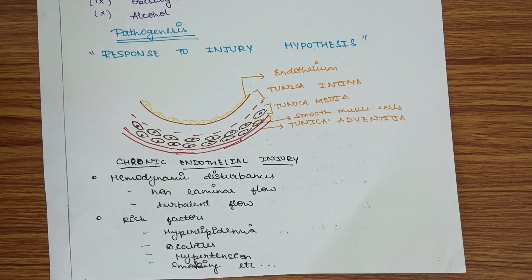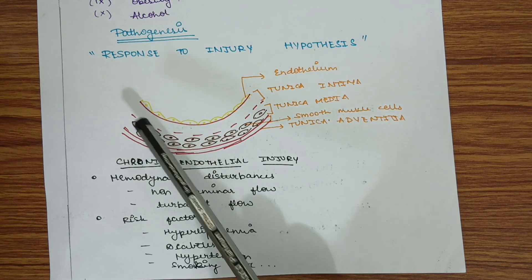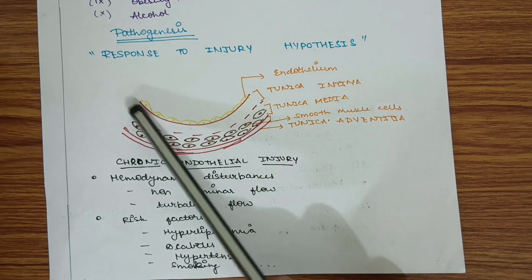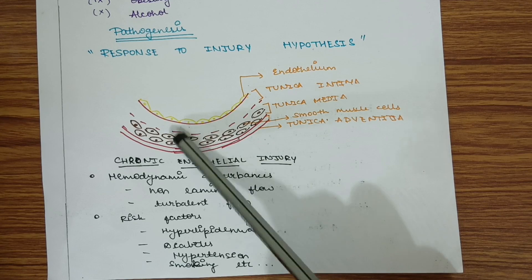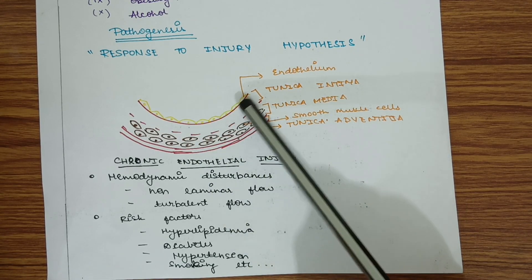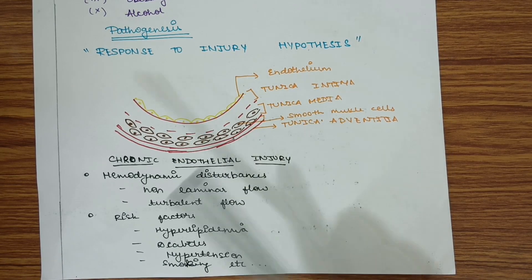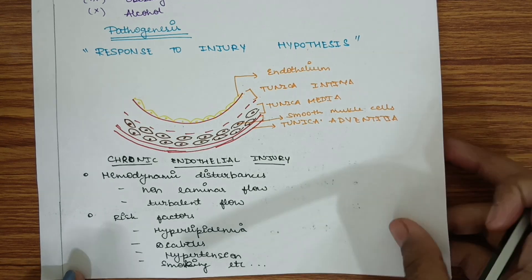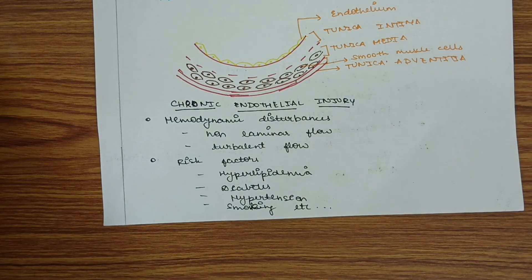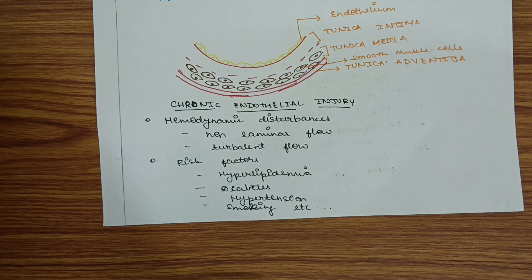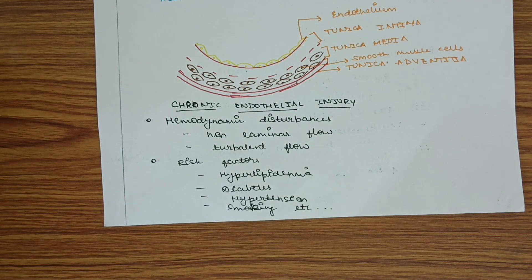Pathogenesis is according to the response to injury hypothesis. The normal blood vessel consists of tunica intima, media, and adventitia. The lipid-rich focal lesions are seen in the tunica intima, which is lined by endothelium. The tunica media contains smooth muscle cells. First, there will be chronic endothelial injury due to risk factors such as hyperlipidemia, diabetes, hypertension, and smoking.